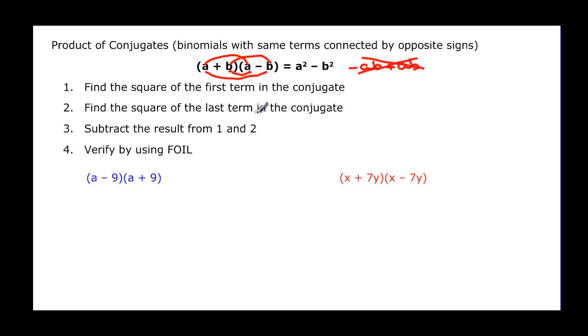So find the square of the first term. Then find the square of the last term in the conjugate. And then make a subtraction out of it. And you can verify with FOIL if you're not sure that you've done it correctly. Okay, so the first terms here are a. And my second terms are 9's. But if I square the first one, I'm going to get a squared. And if I square the 9, I'm going to have 81, 9 times 9. And then it says, step 3, make a subtraction out of those two. And if I FOIL it, I'm going to have a squared. And then plus 9a. Inside will be minus 9a. And then negative 9 times positive 9 is negative 81. And my a terms cancel out because they're opposites. There's my a squared minus 81.